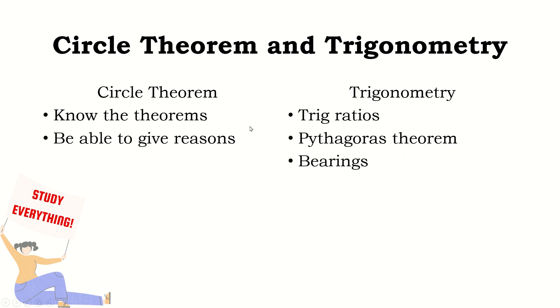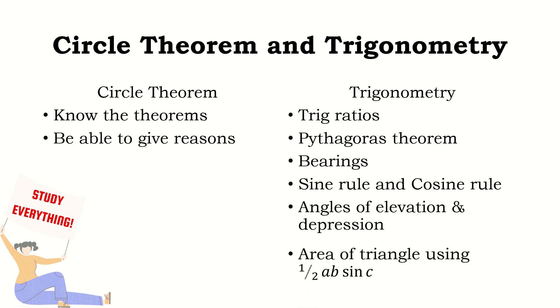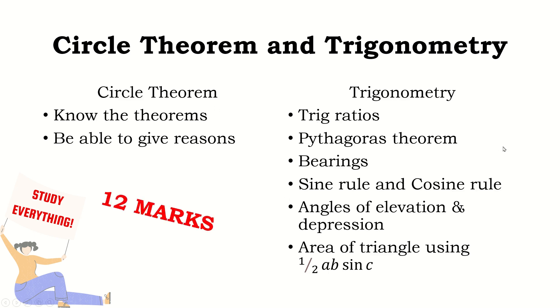For trigonometry, in section one they'll stick to trigonometry and Pythagorean theorem. If the trigonometry is in section two, mainly they'll focus on bearings, sine rule and cosine rule, and probably angles of elevation and depression—can be in both sections. They look at area of a triangle—that can also be in both sections, but that's not as significant. This is a short 12 marks for your circle theorem and your trigonometry.